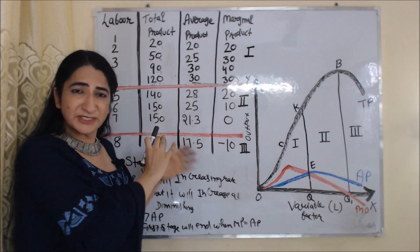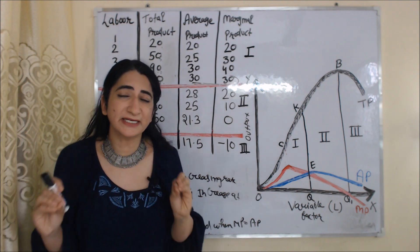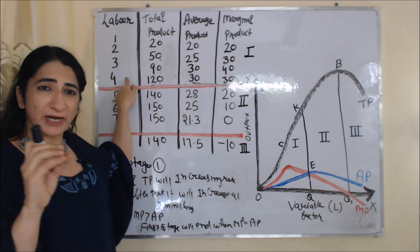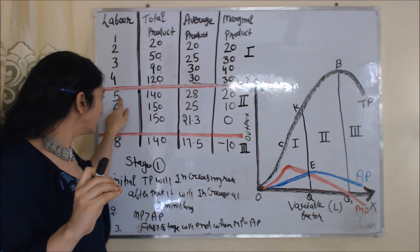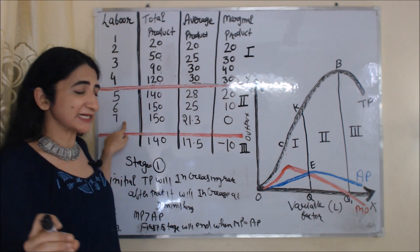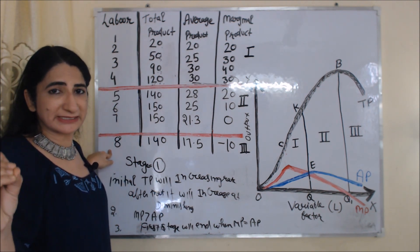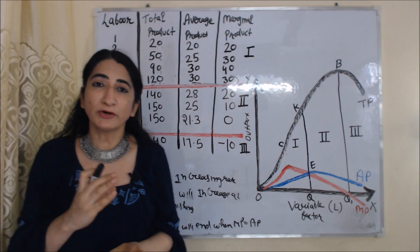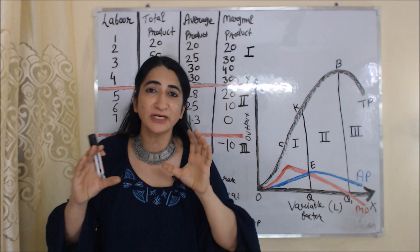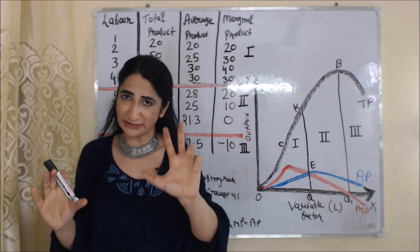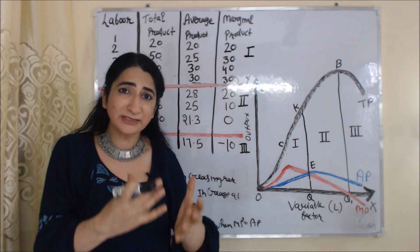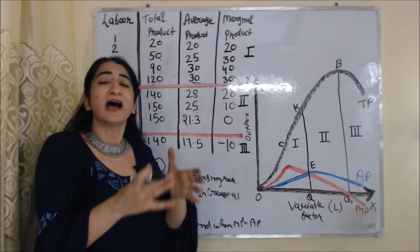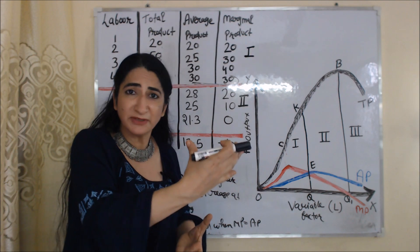This law is divided into 3 stages. From the 1st to 4th labor we have the first stage; from the 5th to 7th labor we have the second stage; and from the 8th labor onward, the third stage begins. For the first stage, remember three things. First: during the first stage, TP initially increases at an increasing rate, then increases at a diminishing rate.